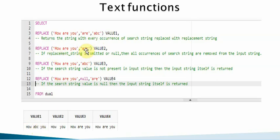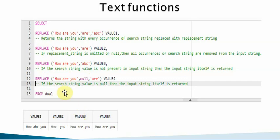In the next example, I provided the search string but not the replacement string. If the replacement string is omitted or null, all occurrences of the search string — that is 'R' — will be removed from the input string. Next, if the search string is not present in the input string, the original input string is returned unchanged. Finally, if the search string itself is null, the input string is returned as-is.